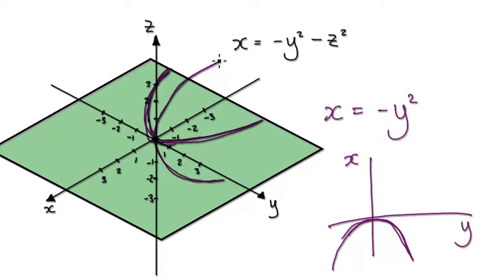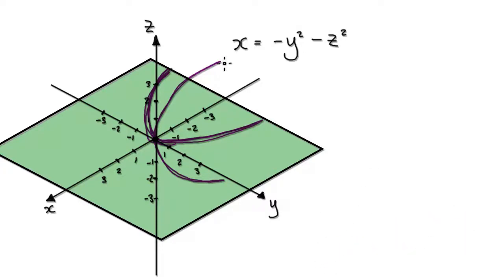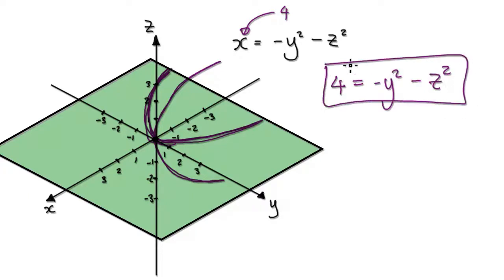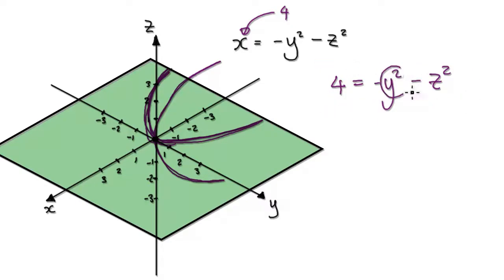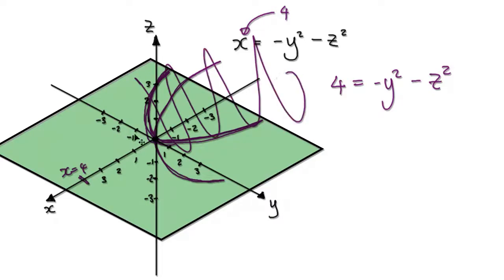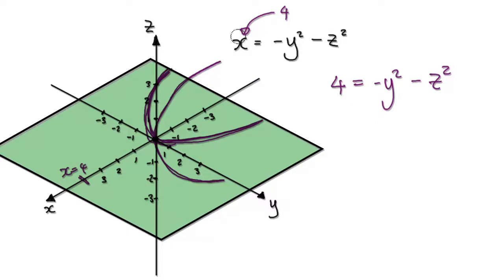So far it gives us something looking like this. Now let's extract more clues. What would happen if you put a positive number — say four — into x? The equation becomes four equals negative y squared minus z squared. This will never be satisfied because both terms are always negative, so it can never equal four. That's why when x is positive, you get nothing — it only exists on the negative x side.